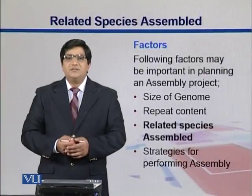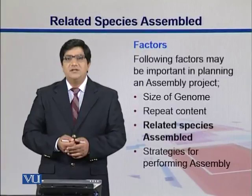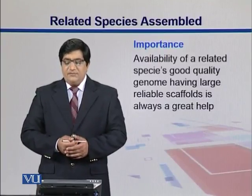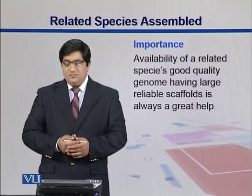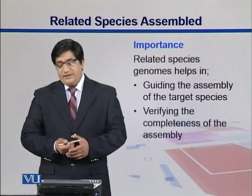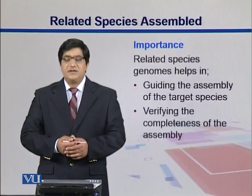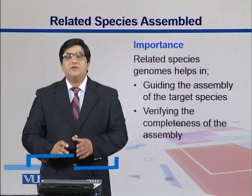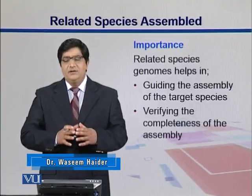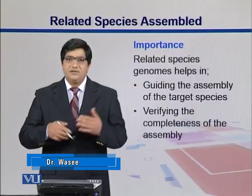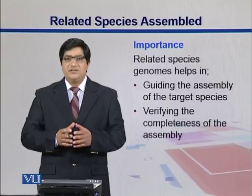Let's see if we have a related species genome already assembled, how can we get benefit out of it, or we might use it to do a guided assembly. The availability of a related species' good quality genome having large reliable scaffolds is always a great help. It helps in guiding the assembly of the target species and it can also help in verifying the completeness of the assembly. Once you are done with your assembly, you can compare with a related species — if we expect that they are 80 to 90 percent similar, you can see that or close to it in their assemblies.